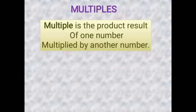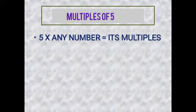It means Multiple is the product result of one number multiplied by another number. Let's understand this with the example of Multiples of 5. How can I get Multiples of 5? For 5's Multiples, the formula is 5 multiplied by any number equals its multiple. 5 को मैं किसी भी number से multiply करूँ - 1 से करूँ, 2 से करूँ, 3 से करूँ, 100 से, 1000 से. किसी भी number से मैं 5 को multiply करूँगी, तो जो answer आएगा, वो 5 का Multiple कहलाएगा.